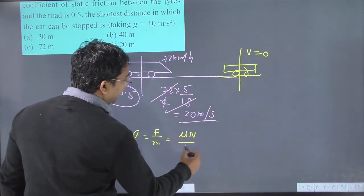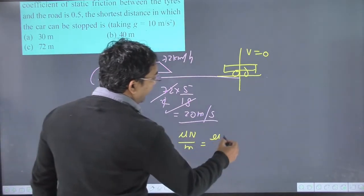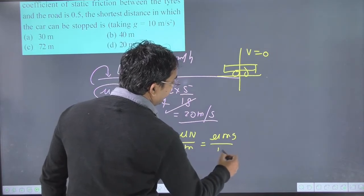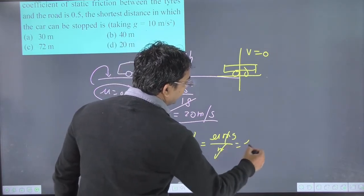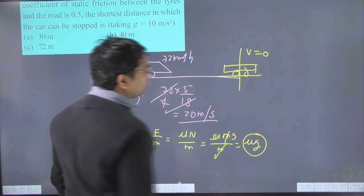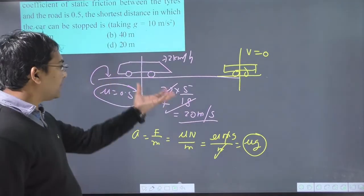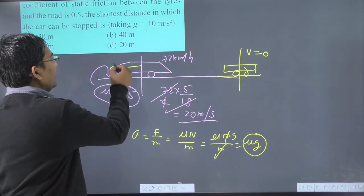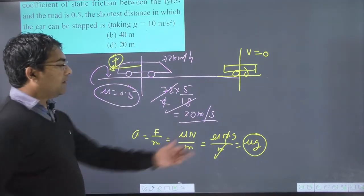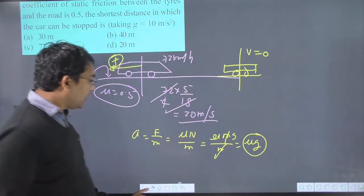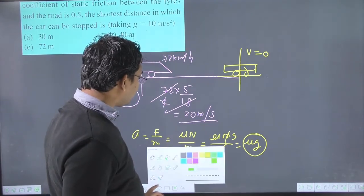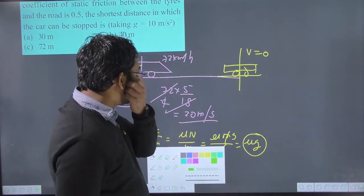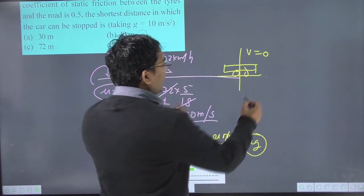The friction force is μmg divided by mass m, so the acceleration is μg. You should remember that the acceleration on a rough surface, when friction is in the opposite direction, is μg. If acceleration is μg, then we will use the third equation of motion.